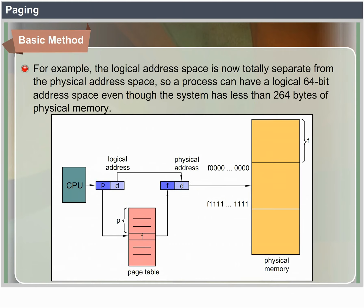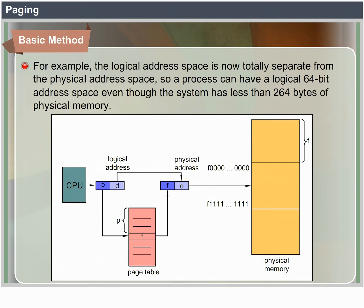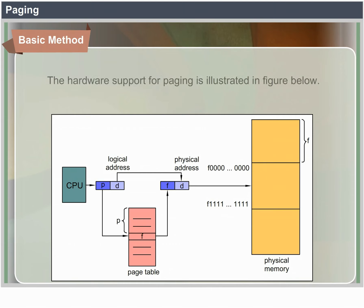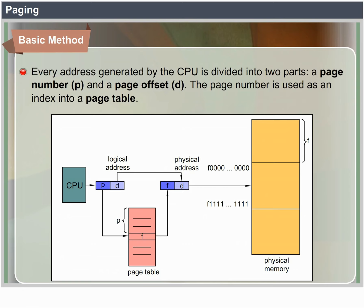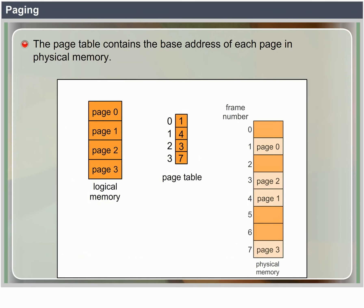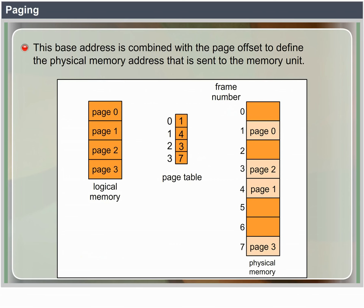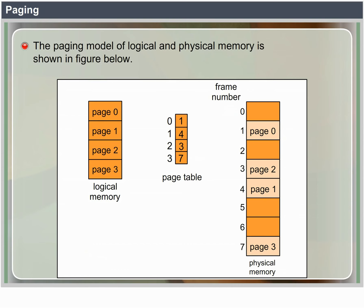Basic Method. The basic method for implementing paging involves breaking physical memory into fixed-size blocks called frames and breaking logical memory into blocks of the same size called pages. When a process is to be executed, its pages are loaded into any available memory frames from their source — a file system or the backing store. The logical address space is now totally separate from the physical address space, so a process can have a logical 64-bit address space even though the system has less than 2^64 bytes of physical memory. Every address generated by the CPU is divided into two parts: a page number P and a page offset D.